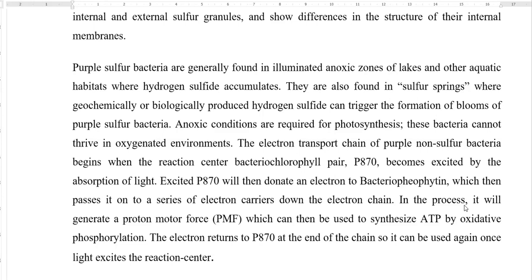The electron transport chain of purple sulfur bacteria begins when the reaction center bacterial chlorophyll pair P870 becomes excited by the absorption of light. Excited P870 then donates an electron to bacteriophytin, which passes it on to a series of electron carriers in the electron transport chain. In this process, an electrochemical gradient is generated that results in the formation of proton motive force, which is used to synthesize ATP by oxidative phosphorylation. The electron finally returns to P870 at the end of the chain so it can be used again once light excites the reaction center.